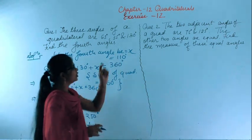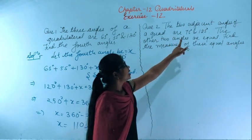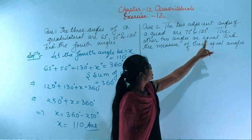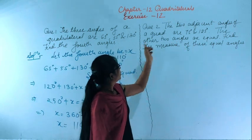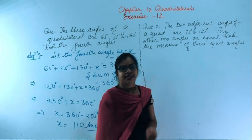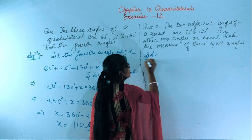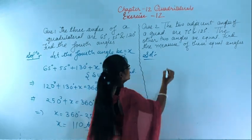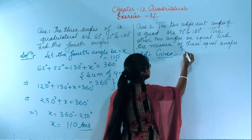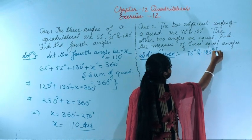Similarly, in the second question, it says that two adjacent angles of a quadrilateral are 75 degrees and 125 degrees, and the other two angles are equal. Find the measure of these equal angles.